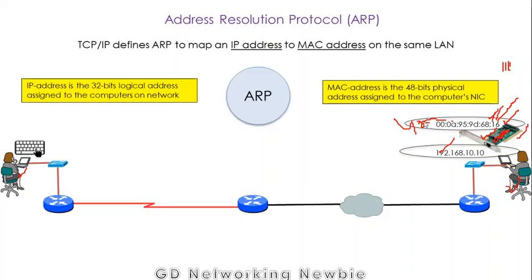ARP is a protocol which translates an IP address to the MAC address — it maps them. If you give an IP address to the ARP protocol, ARP protocol will convert that IP address to the MAC address.